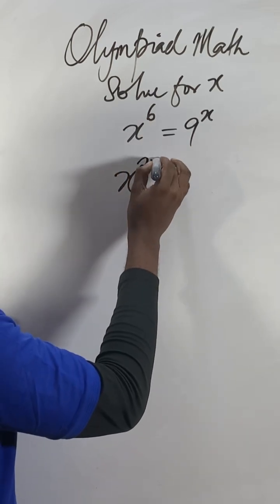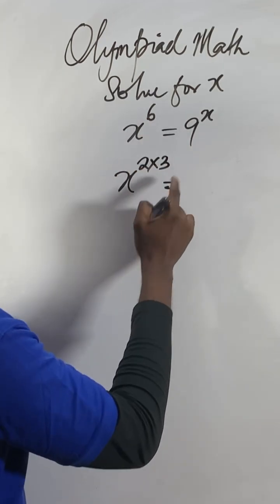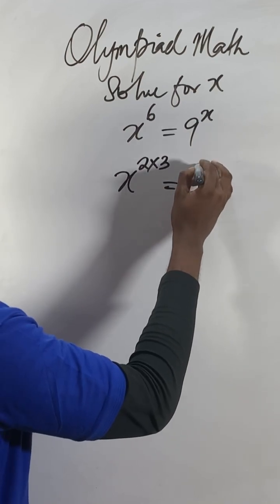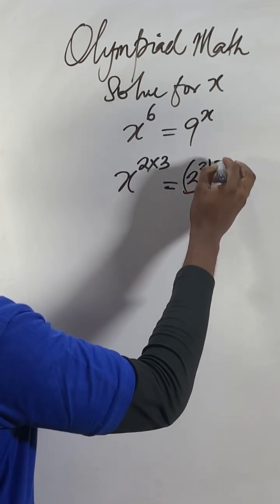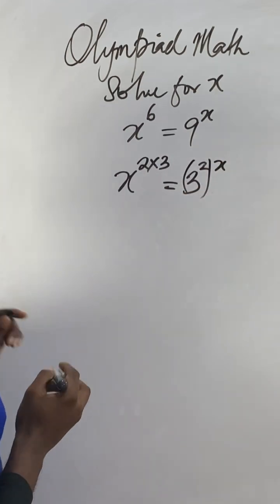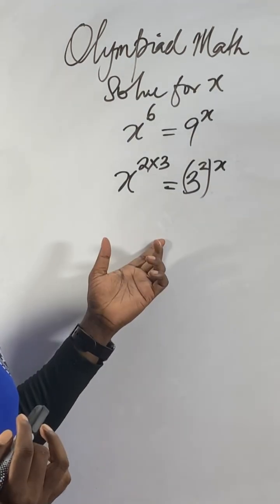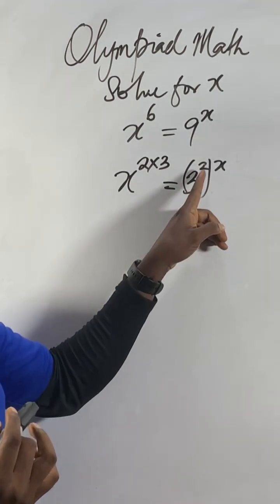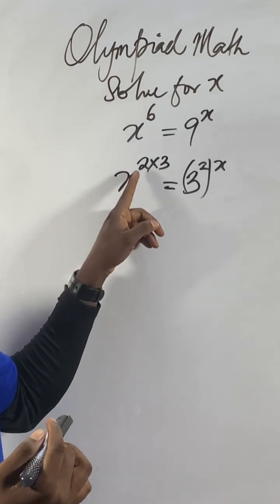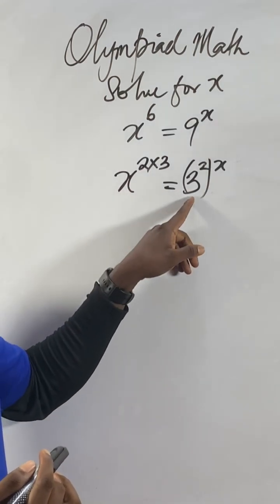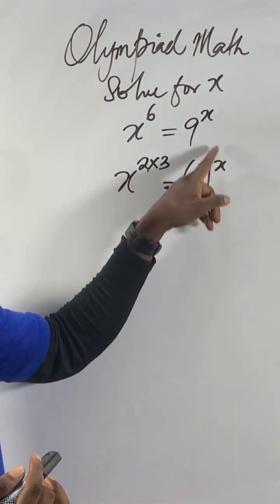Six equals two times three. And nine — three to the power of two will give us nine. Then put the x there. Now I say this: two times x is the same thing as 2x. So three raised to the power of two gives us nine. x like this one.